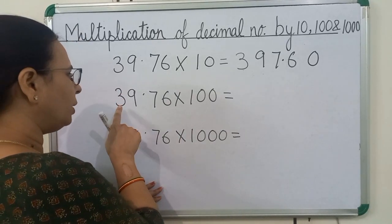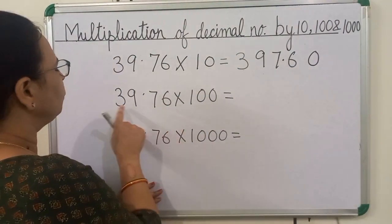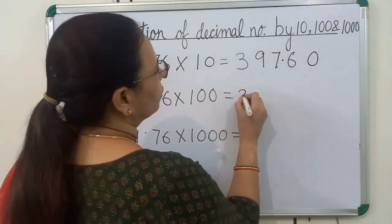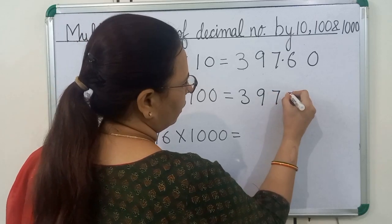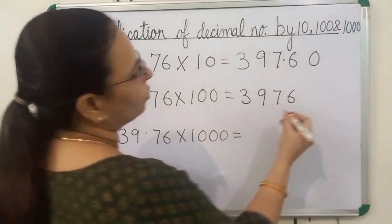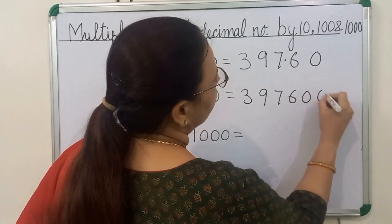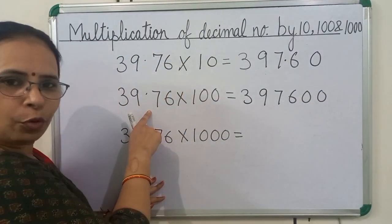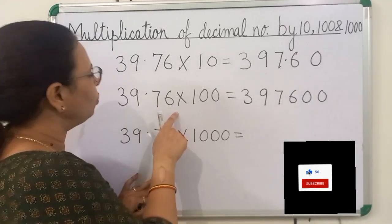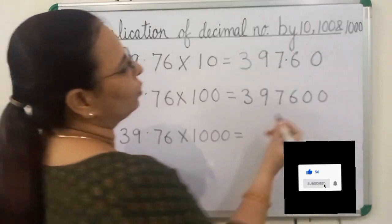Now we will multiply 39.76 by 100. We will multiply 3976 by 1 and get 3976. 100 has 2 zeros, so we will write here 2 zeros. Now we will focus on the decimal point. In the question, the decimal point is before 2 digits, so in the answer we will put the decimal point before 2 digits.